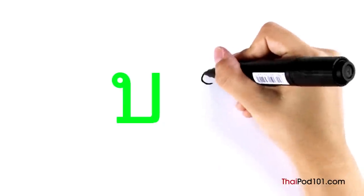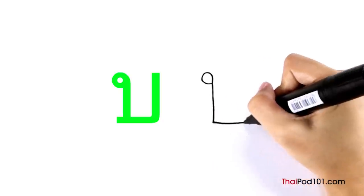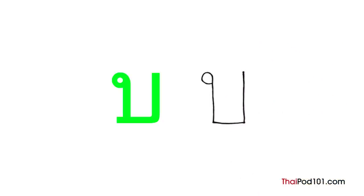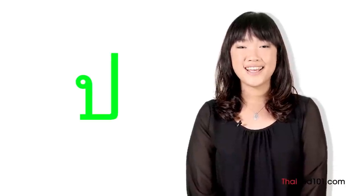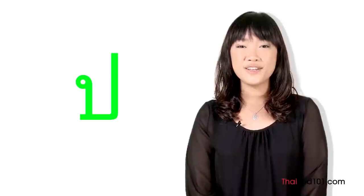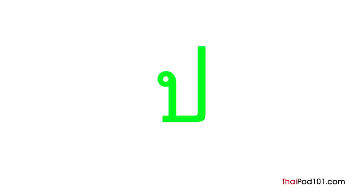BOR BAI MAI means 'leaf.' As the initial consonant of a syllable, BOR BAI MAI makes a sound like the B in 'bucket.' POR PLA: as an initial consonant it is an unaspirated P, in the middle between a regular English B and P. As a final consonant, POR PLA makes a P stop.